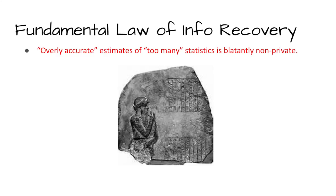One thing we've learned from cryptography: if anybody finds a way of breaking something, there are probably many other ways — simple and complicated variations. This is always the tip of the iceberg. Indeed, the fundamental law of information recovery — first due to Dinur and Nissim in 2003 — essentially says that overly accurate estimates of too many statistics completely destroys privacy. The definition of 'overly accurate' is tied to 'too many.'